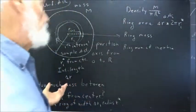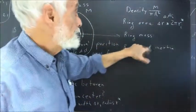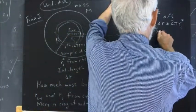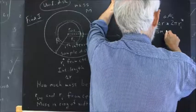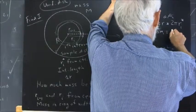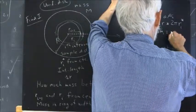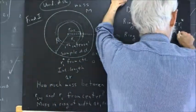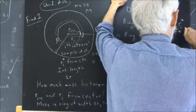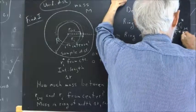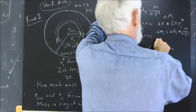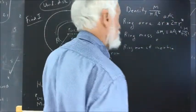Okay, so what's the mass? Well, the mass is delta M sub i equals delta A sub i, the area, multiplied by density, which is M over pi times big R squared.